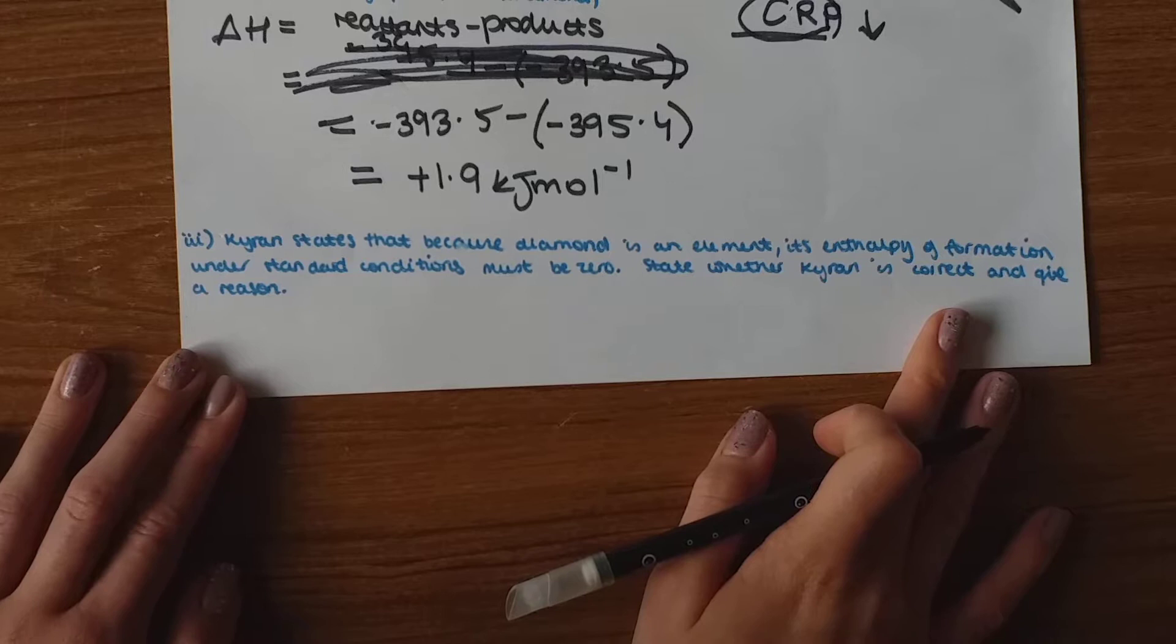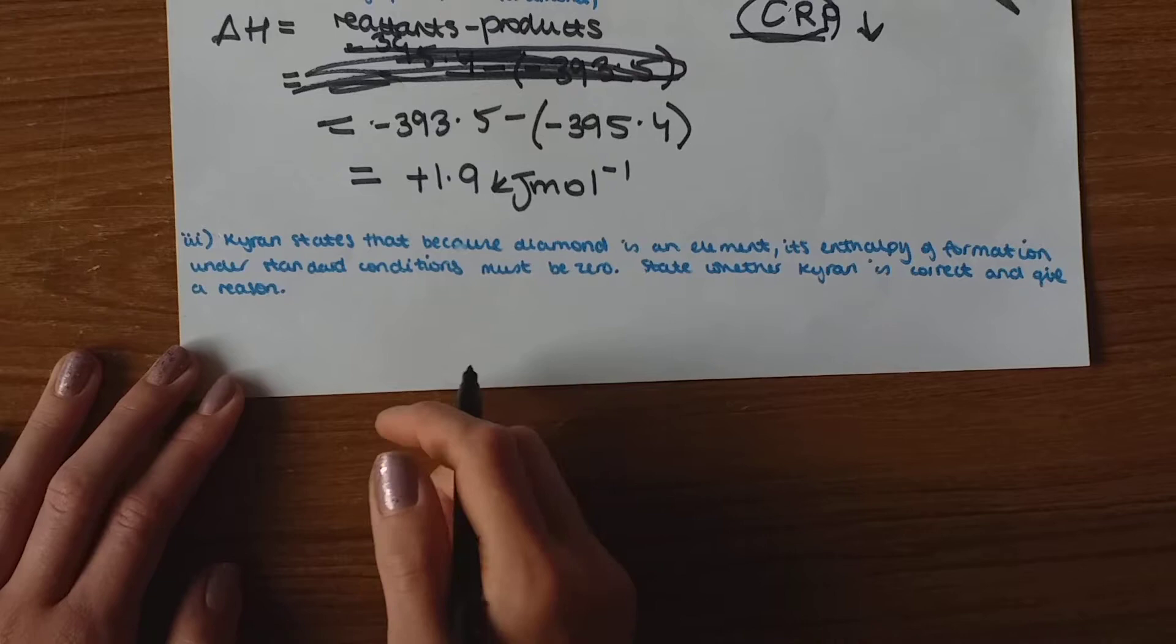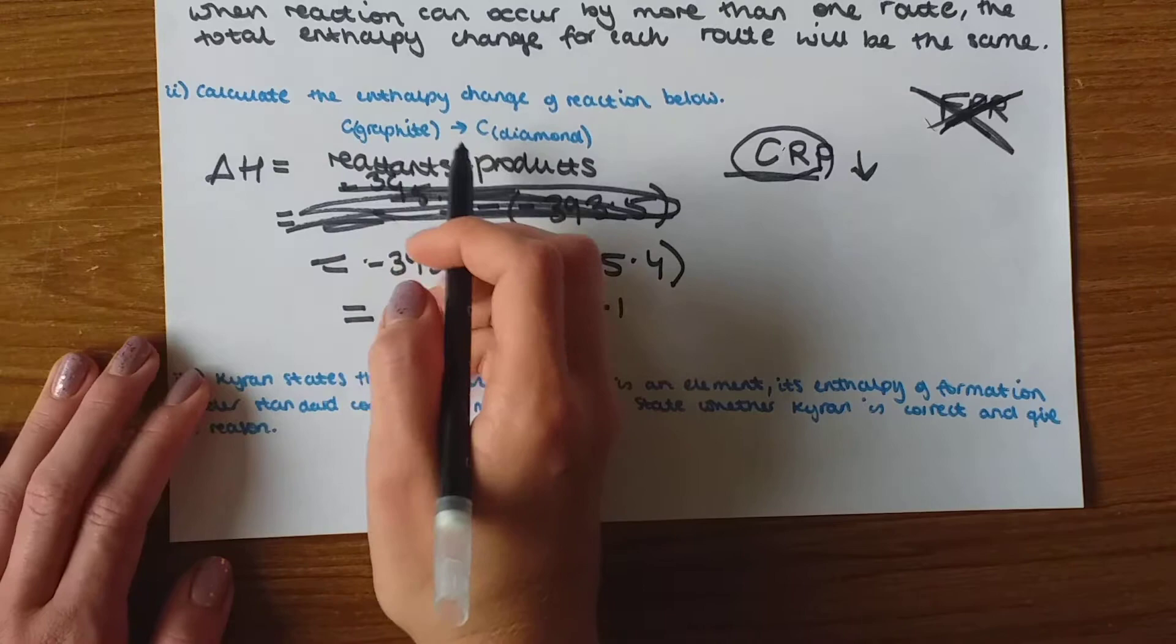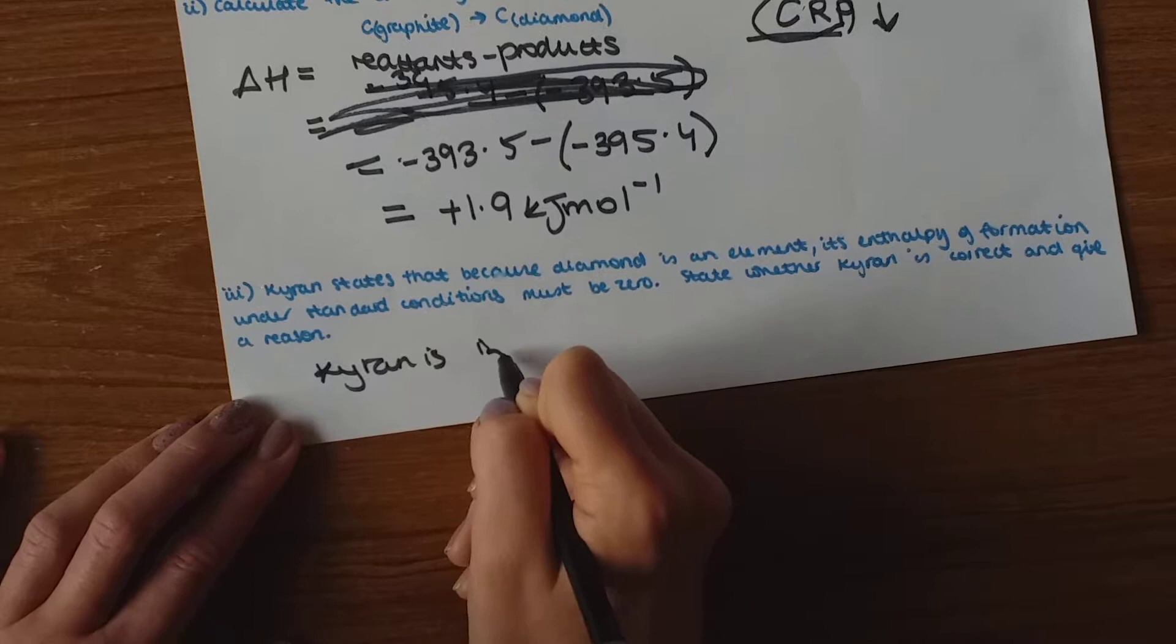So the next part says Chiron states that because diamond is an element its entropy of formation under the standard condition must be zero. State whether Chiron is correct and give a reason. So he's not correct. And this is because neither diamond or graphite are the standard states of carbon. So our answer is Chiron is incorrect.